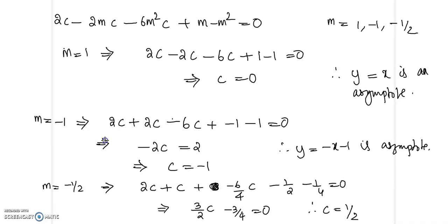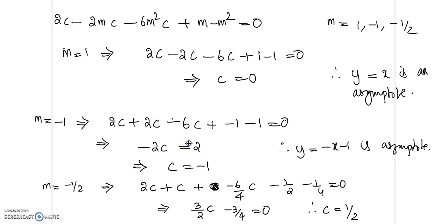Now let us substitute m equal to minus 1. When m is minus 1, we get 2c plus 2c by m minus 6c, then minus 1, then minus 1, then minus 1. That gives minus 2c equal to 2, so c is minus 1.